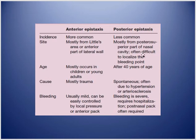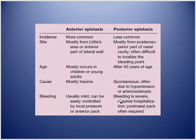Anterior epistaxis is often difficult to localize. Anterior epistaxis occurs in young people; posterior occurs in older people. Causes of anterior are mostly trauma; posterior in elderly suggests atherosclerosis or hypertension. Anterior epistaxis is easy to control; posterior is difficult to control and requires hospitalization.